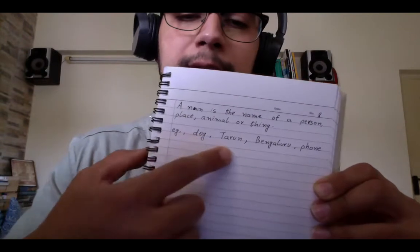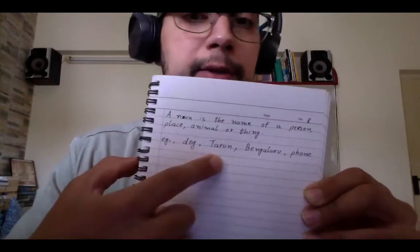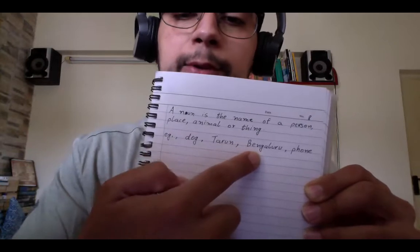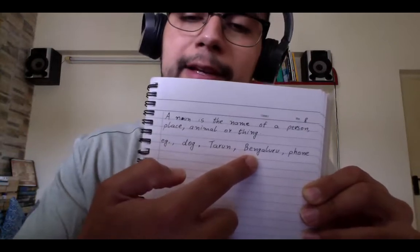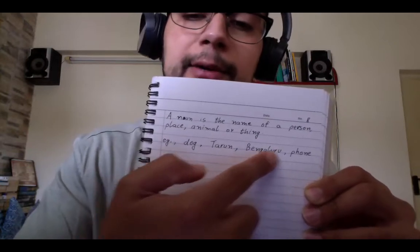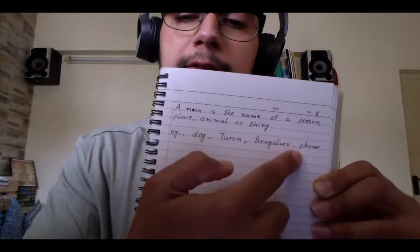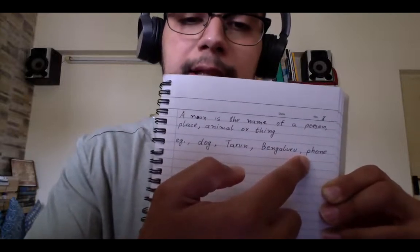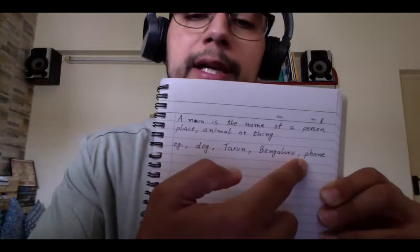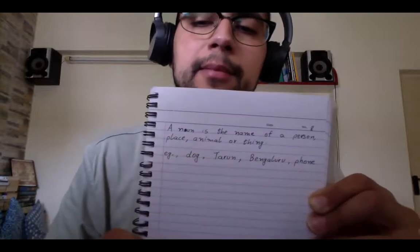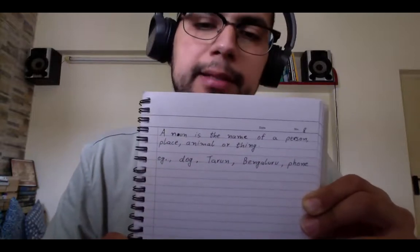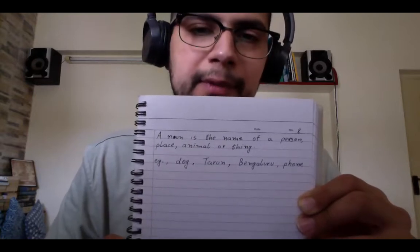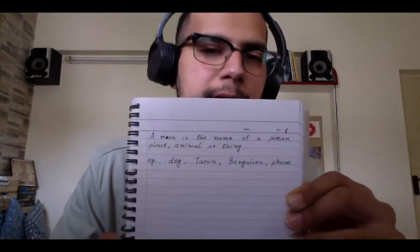Dog is a noun. Tarun — my name is also a noun. Bengaluru, the place where I live, that's a noun. And phone — the thing that all of you are using just now — that is also a noun. It's the name of a person, a place, an animal or a thing. Can you think of any more nouns? Any more words?